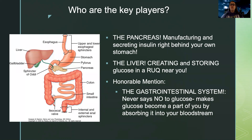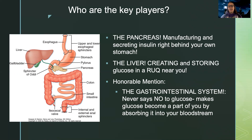First, we need to know who's affected — who are the key players in this illness. With diabetes, the main player is the pancreas, because diabetes is all about either not making enough insulin, or any insulin at all, or there's insulin resistance where even though there's plenty of insulin, it's not working to get glucose into the cell. The liver and the gastrointestinal system are also important because they're involved in sugar — the liver helps to store and create glucose, and the GI system is all about absorbing glucose.